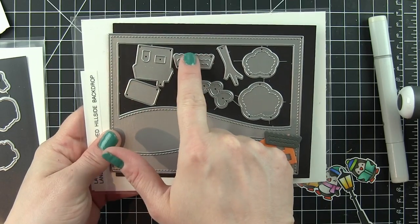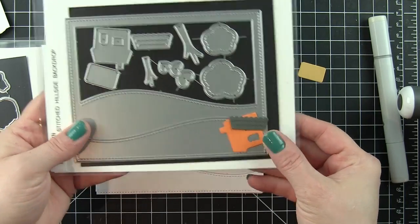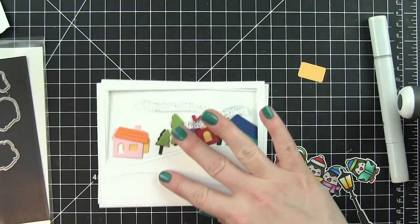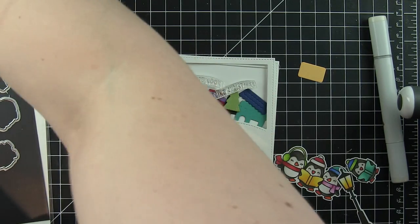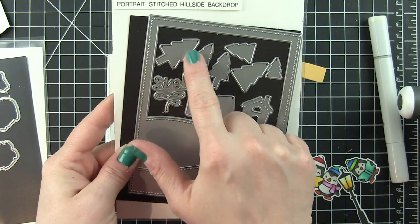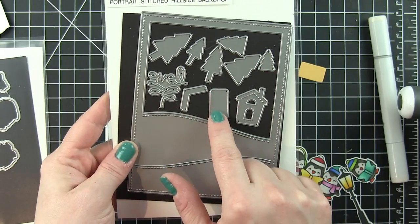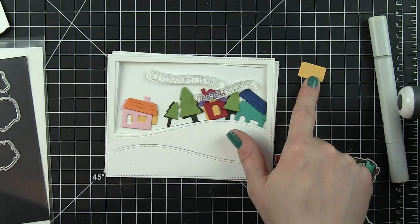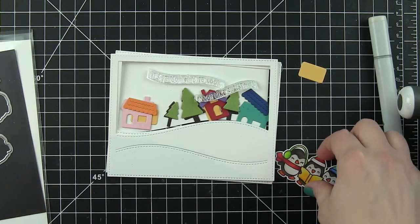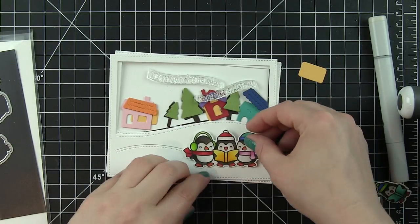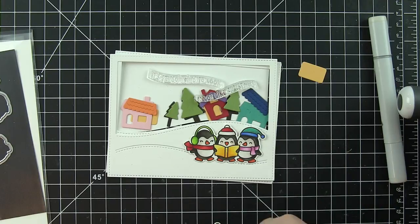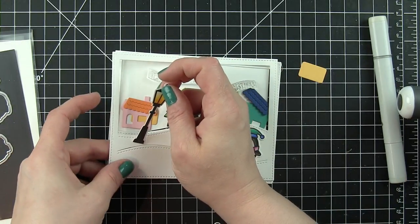This is the landscape stitched hillside backdrop. I absolutely love both this and the portrait. They create fantastic scenes immediately. I am a huge fan of creating scene cards, and anything that I can use that helps that makes me so super happy. So I used a house and the frame from the landscape, but this is the portrait. It has those fantastic trees, another little house, and I'm going to mix and match those. It also has these little rectangles that you can die cut and pop behind any of the door and window openings for a contrasting color, and in this instance, it makes it look like the lights are on.